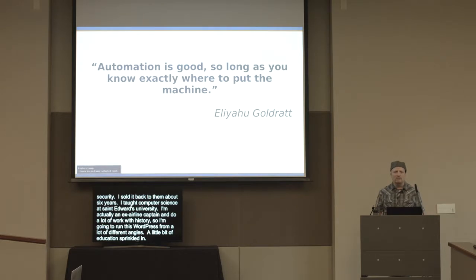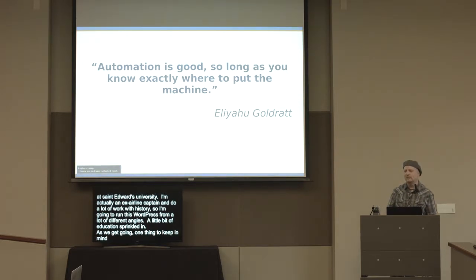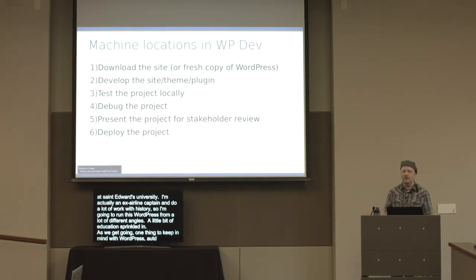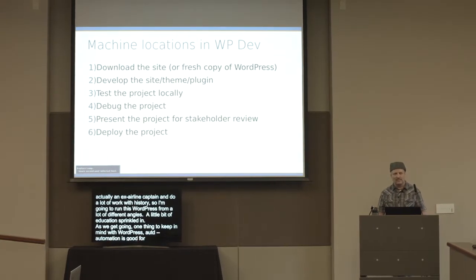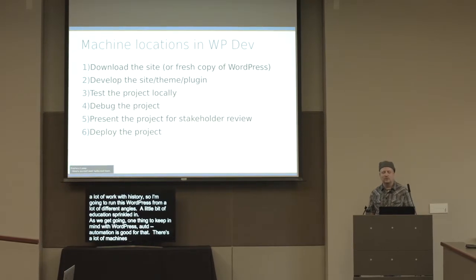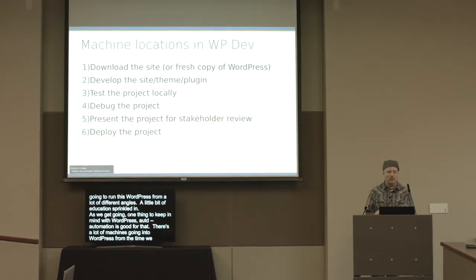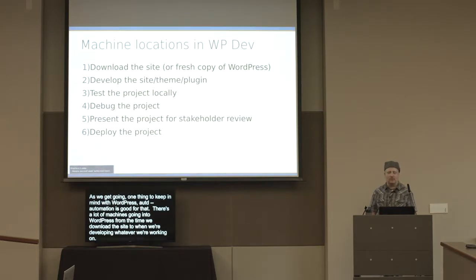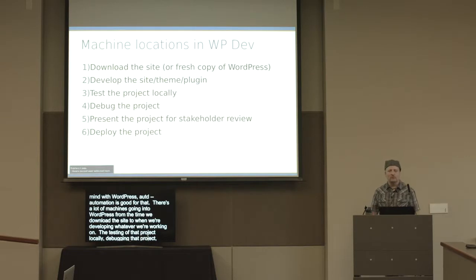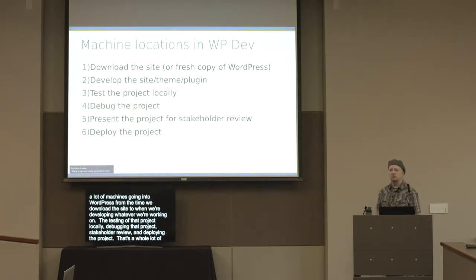As we get going, one thing to keep in mind: automation is good so long as you know exactly where to put the machine, and WordPress exemplifies this. There are a lot of machines in the WordPress workflow — from downloading the site, to developing, to testing locally, debugging, stakeholder review, and deploying. That's a whole lot of places where we could put automated processes to help us in WordPress.